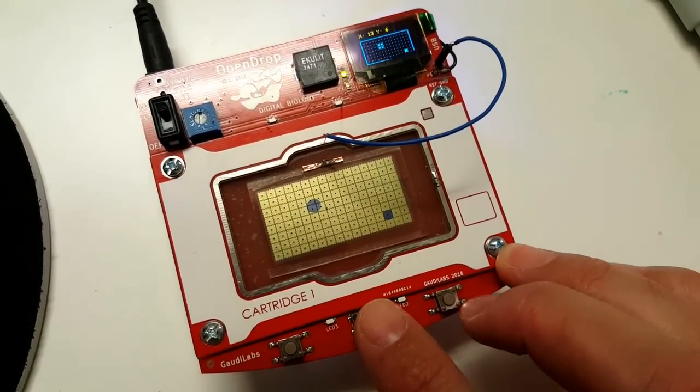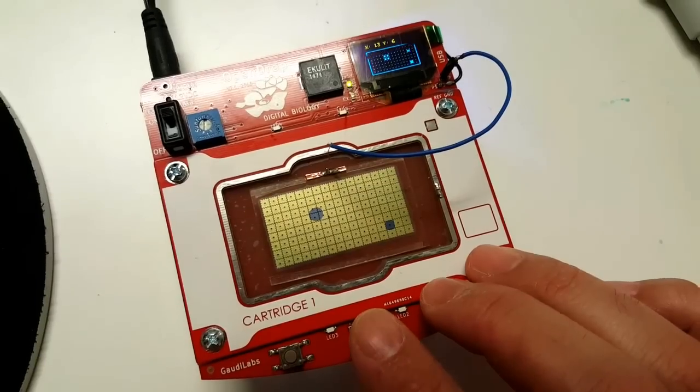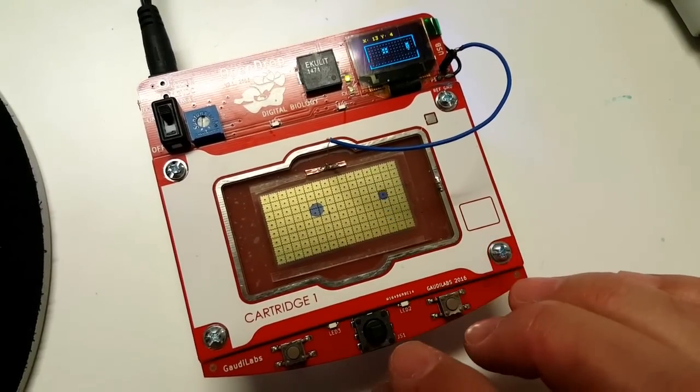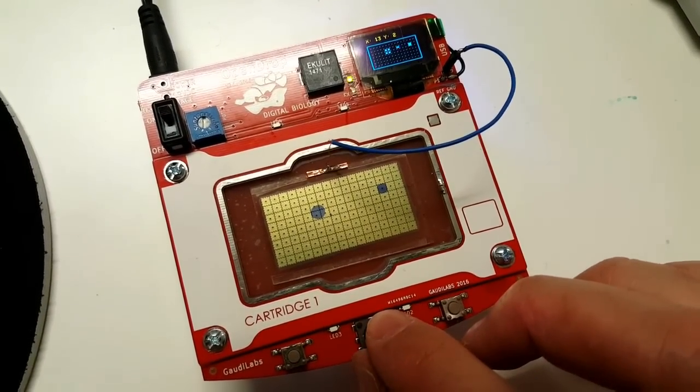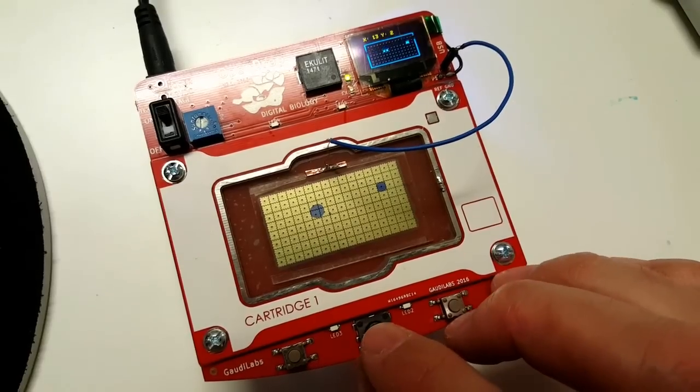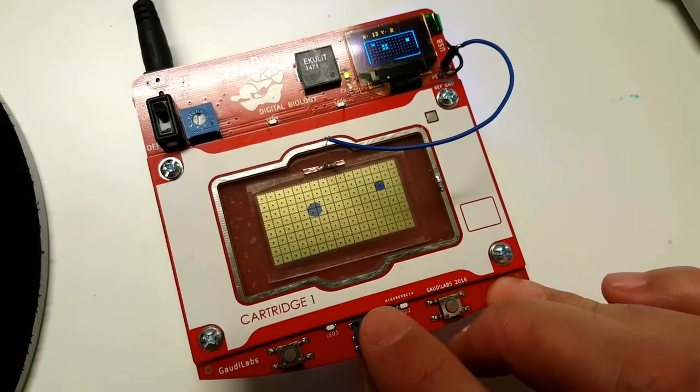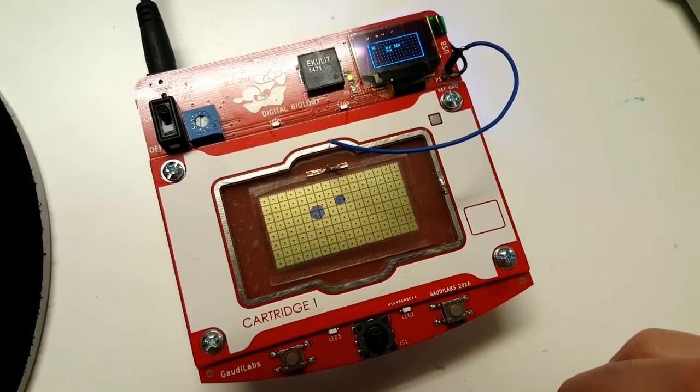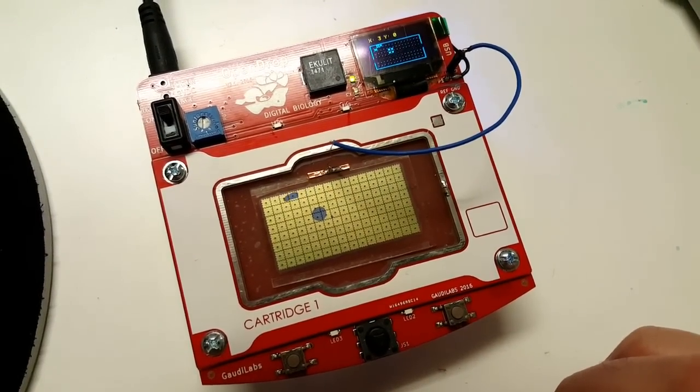With the joystick, I set a new goal, hit go, and the droplet will go there, avoiding other obstacles.